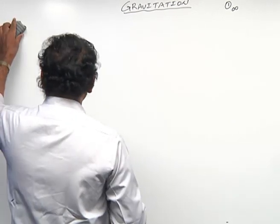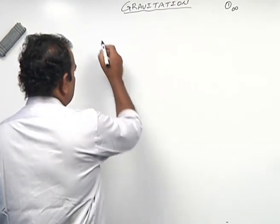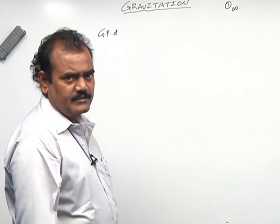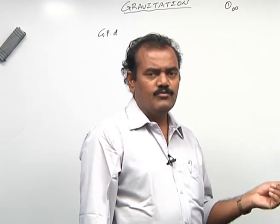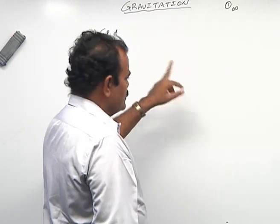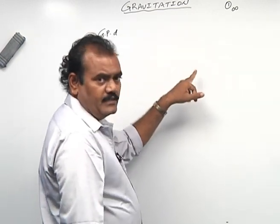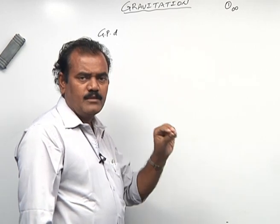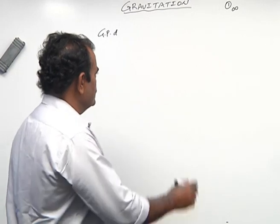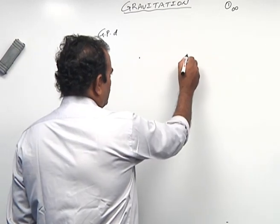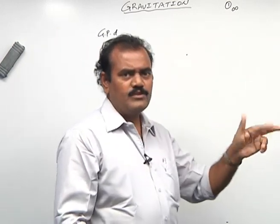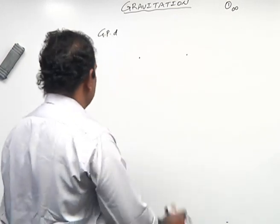After that we are coming to gravitational potential difference. Gravitational potential difference - it is the burden in moving a unit mass from one point to another point, and that is known as the gravitational potential difference between those two points. That is the second definition.